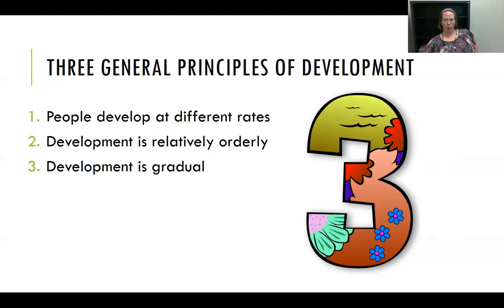The third principle is that development is gradual — it happens over time. In fact, it may be so gradual that it escapes our notice, as may be the case of someone who experiences a growth spurt who seemingly shoots up overnight, but has probably been growing a little at a time over weeks or months without anyone noticing or recording the differences.